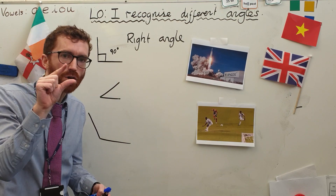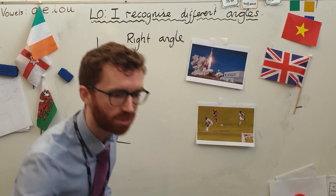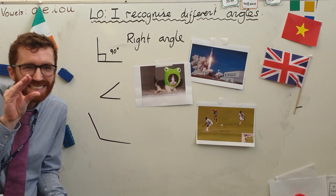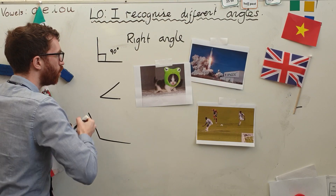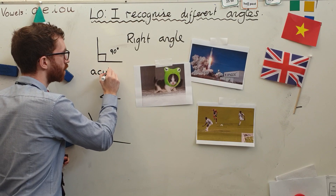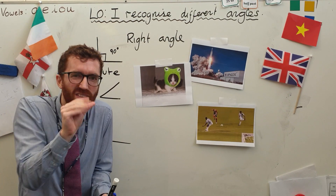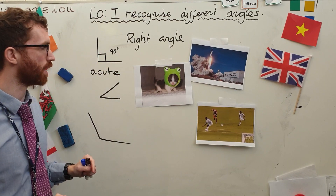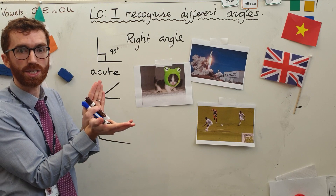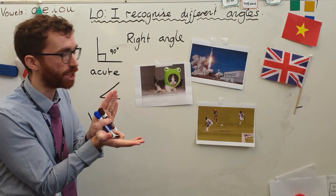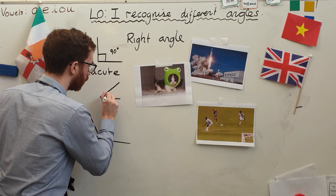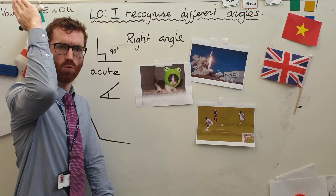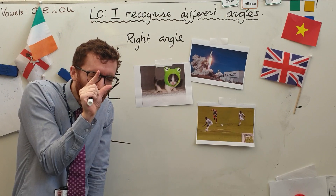Now, this is less than a right angle. It is smaller than a right angle. We call this an acute angle. Can you say acute? It is less than 90 degrees — so it's anywhere between 0 and 89.9 degrees. And it is an acute angle because it is nice and small. So we've got so far: at the top we've got right angle, and we've got these smaller ones — acute angle.